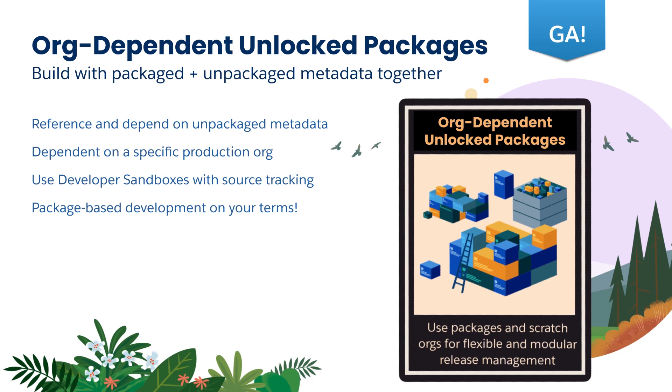We work really closely with the other teams in developer services to bring you a great developer experience, and that includes packaging. The packaging team has introduced org-dependent unlock packages as a way for teams with large legacy orgs and lots of interdependent metadata to break up their code into packages. Using the org-dependent flag when running the package create command, you can create packages that are dependent on unpackaged metadata that is in the org. These packages enable you to package metadata without completely accounting for all metadata dependencies — a great way to start breaking up your orgs and getting the benefit of faster deployments by logically grouping your metadata. Org-dependent unlock packages are in beta with an expected GA of Spring '21.